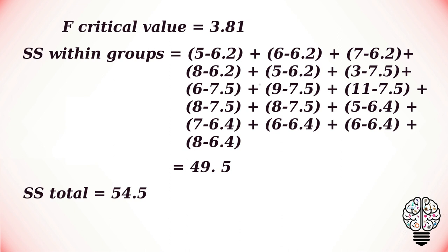the squares between groups. We have to subtract the sum of the squares of the total minus the sum of the squares within groups. If we do that, we'll get our sum of the squares between groups value as 5.5.